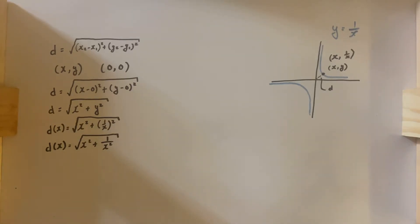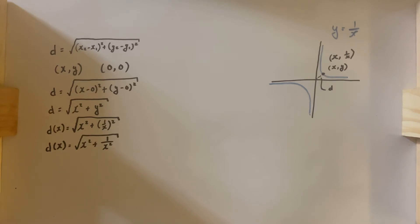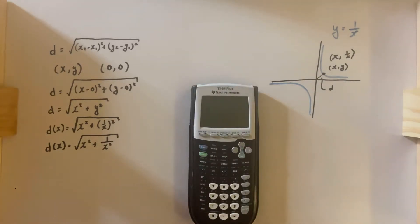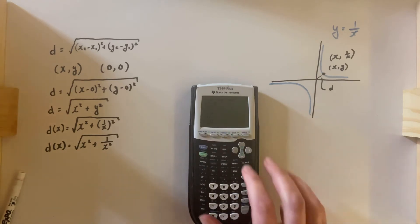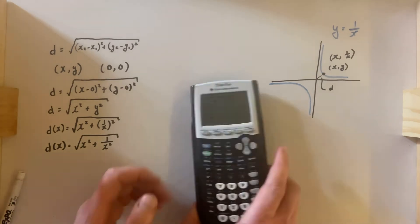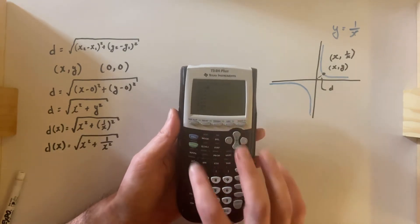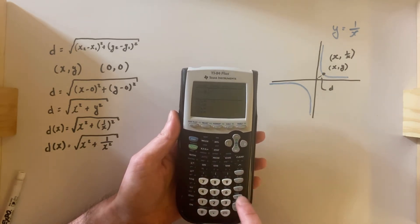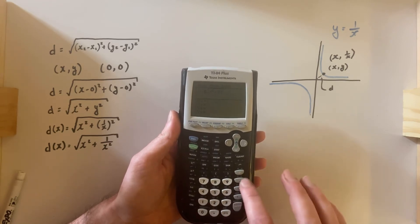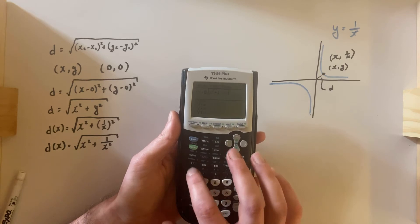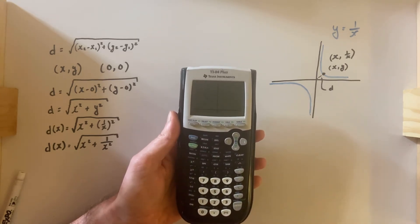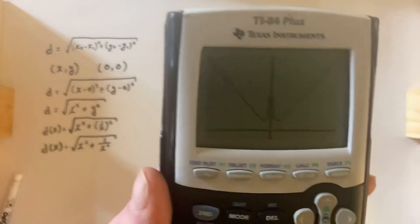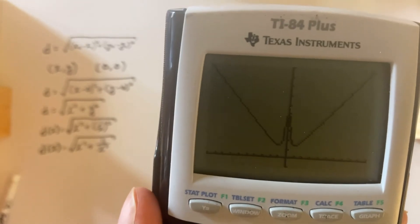That's the first part of the problem answered. Now we can go ahead and graph this function d of x using our graphing utility. I input the square root of x squared plus 1 over x squared, and graphing that gives a rather cool, funky-looking graph.